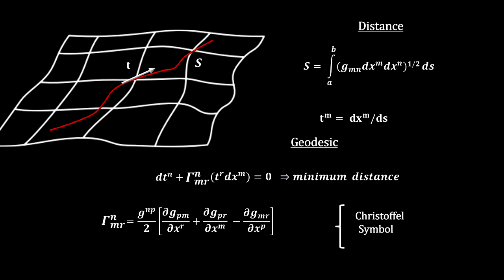Now that we have a way to measure distance and find geodesics, we can determine a space's curvature. Riemann used a concept called Parallel Vector Transport. Picture moving a vector around a triangle in flat space in such a way that it remains parallel to the starting vector. By the time we get back to the start, we have the exact same vector as we started with.